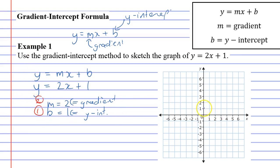If our y-intercept is 1, that means that our line intercepts at this point here. It intercepts the y-axis at 1.